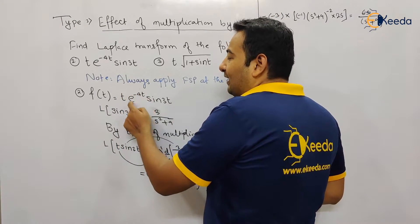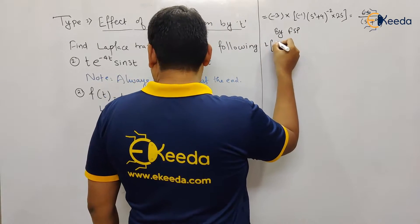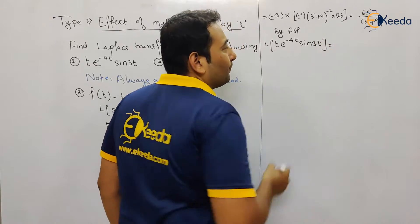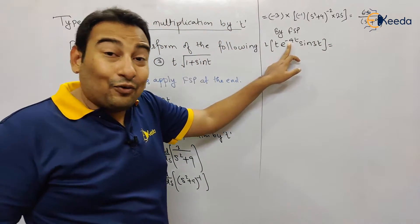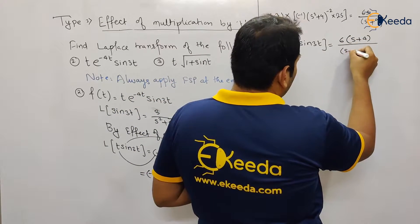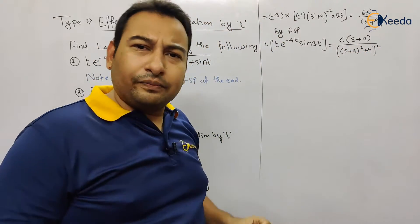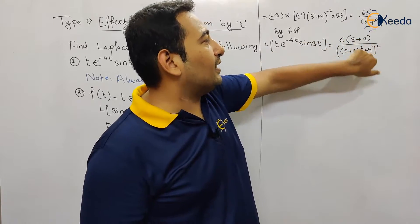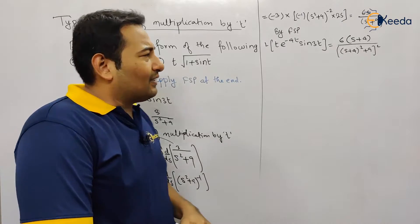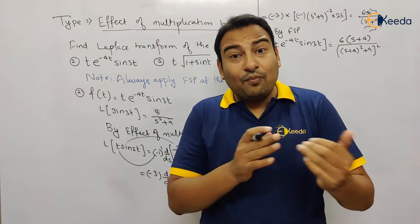Last — the final step — we need to apply FSP. By FSP, s will be shifted. Here we have e^(−4t), therefore s will be shifted by +4. So this will be 6(s + 4) upon [(s + 4)² + 9]². Wherever there is s, there will be shifting. So this is the solution for t·e^(−4t)·sin(3t).